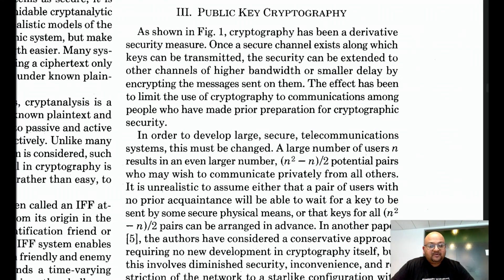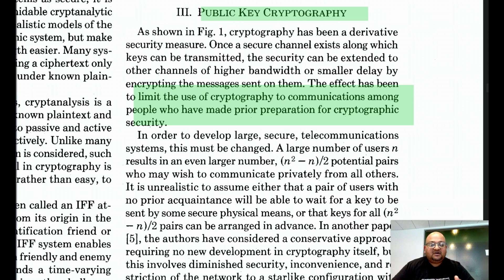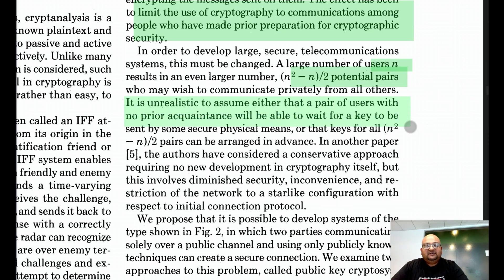Now we come to the part of the paper that lays out the ideas for public key cryptography. The major limitation of existing cryptosystems at the time was that you had to have shared a private key before communicating, which is not always practical. In fact, if you have n people who would like to communicate with each other, you have on the order of n squared potential pairs who might want to communicate privately, and it is completely unrealistic to assume that each of those n squared pairs will wait for the fortuitous circumstances that will allow them to share a secret key.